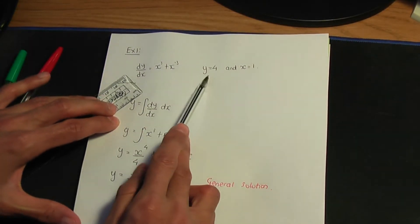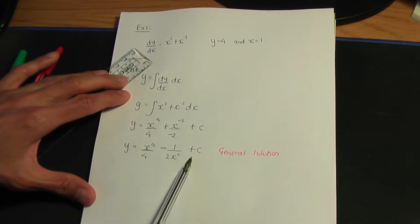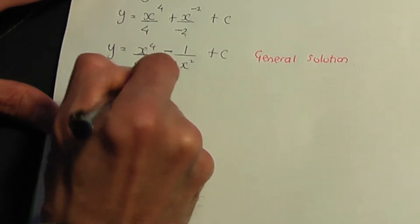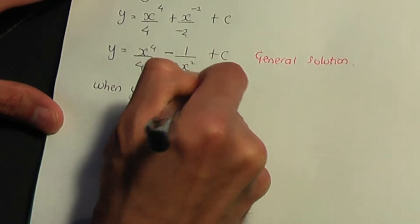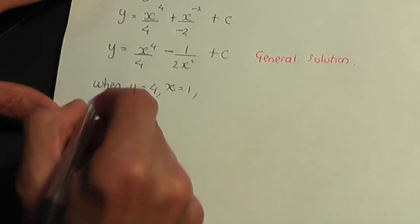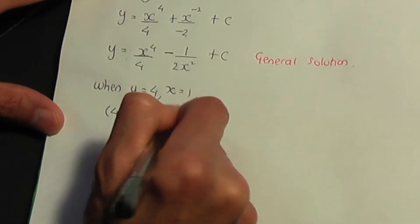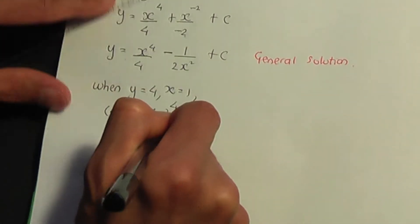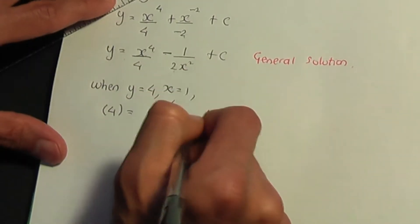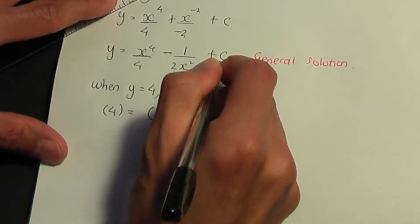By using the values y equals 4 and x equals 1, we can calculate the value of this integration constant. So when y equals 4 and x equals 1, substituting into the general solution: 4 equals 1 to the power of 4 divided by 4, minus 1 over 2 times 1 squared, plus C.